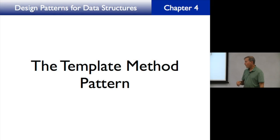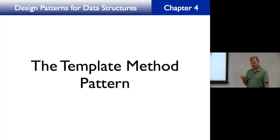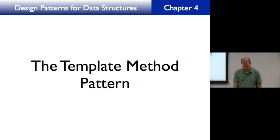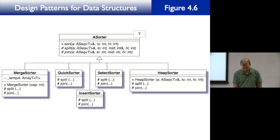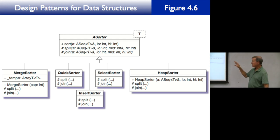So today what we are going to do is look at some material that we skipped over last time — namely we're going to look at the preconditions and postconditions for the abstract sorter. Remember, this is the template method pattern, and we saw last time that the way this is structured is we have an abstract sorter which specifies a sort, a split, and a join.